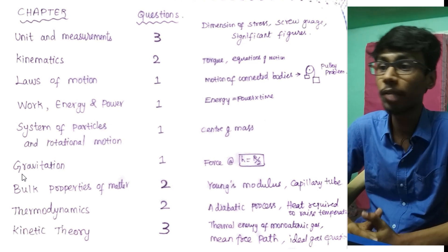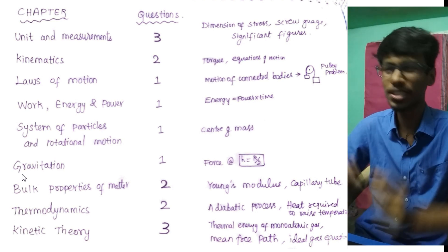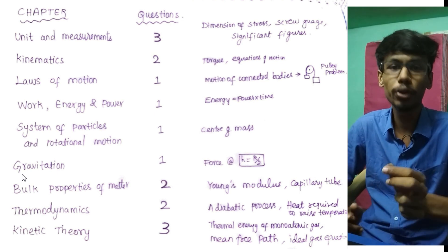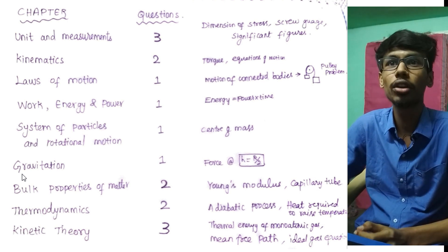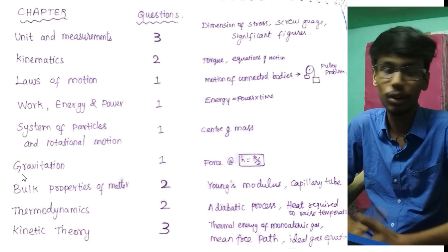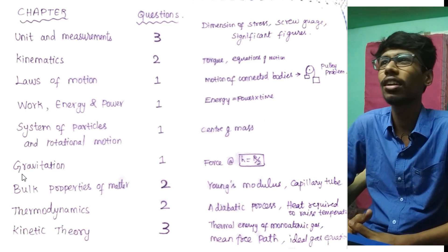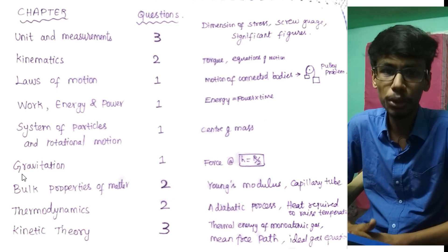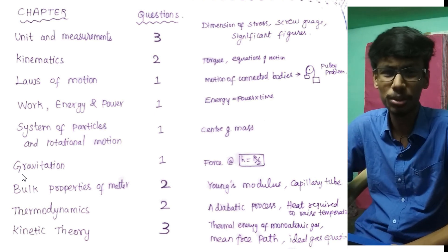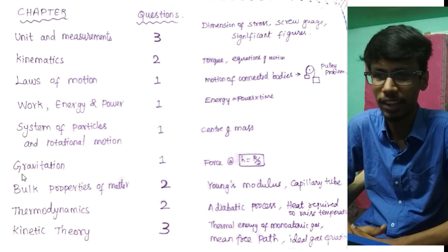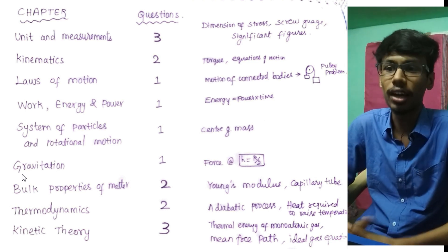The next chapter is Kinematics — two questions. One is torque: torque equals force into distance, represented as a vector in the position vector — just a simple question. Then equations of motion: V² minus u² equals 2as. If you apply that equation with all values, we can apply height of the tower — easy direct formula questions.